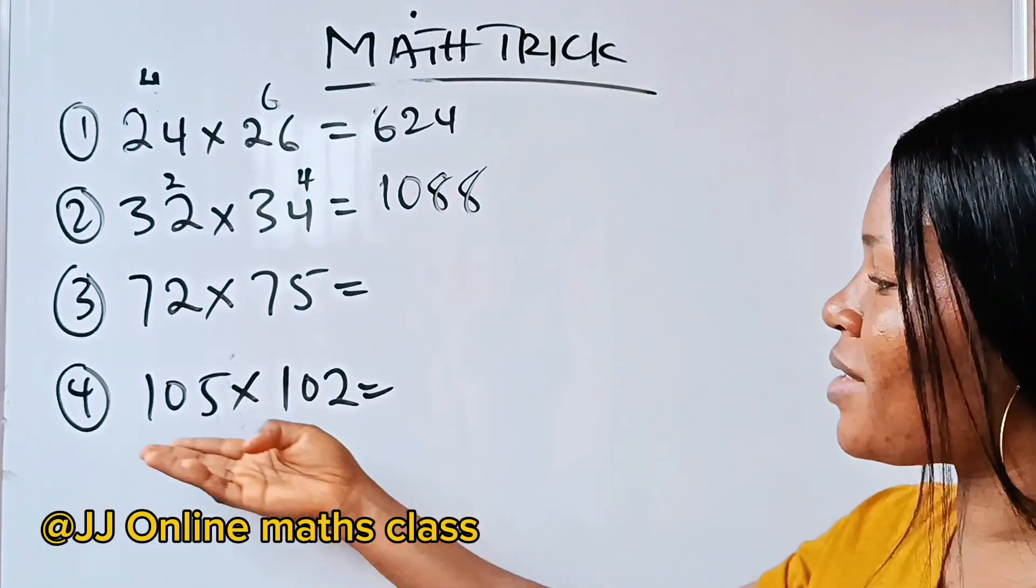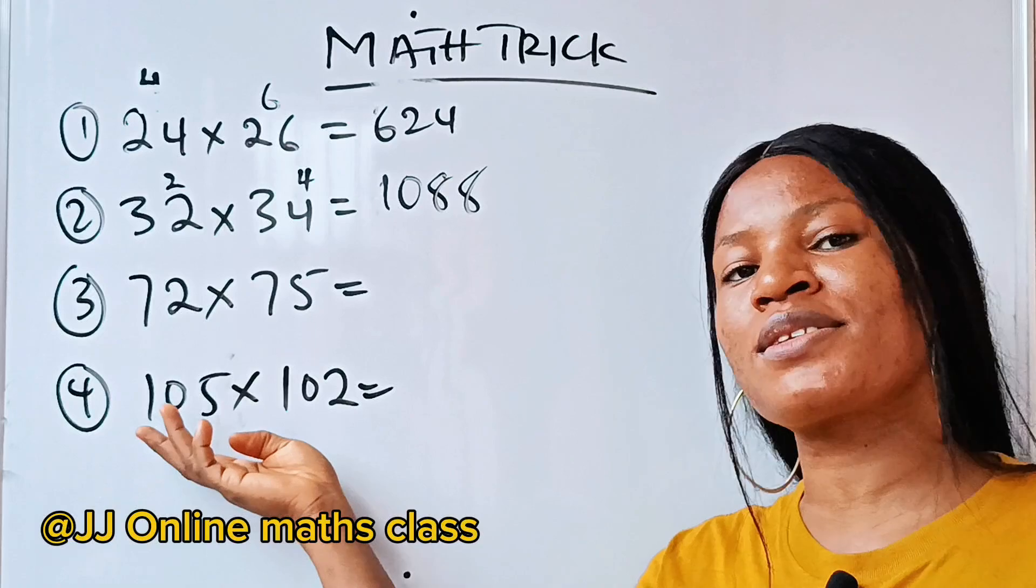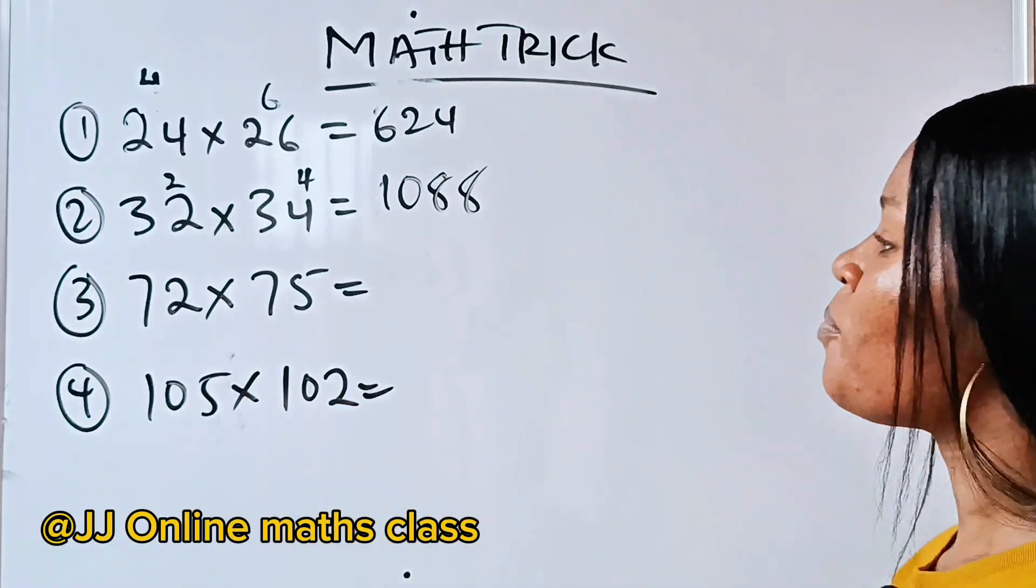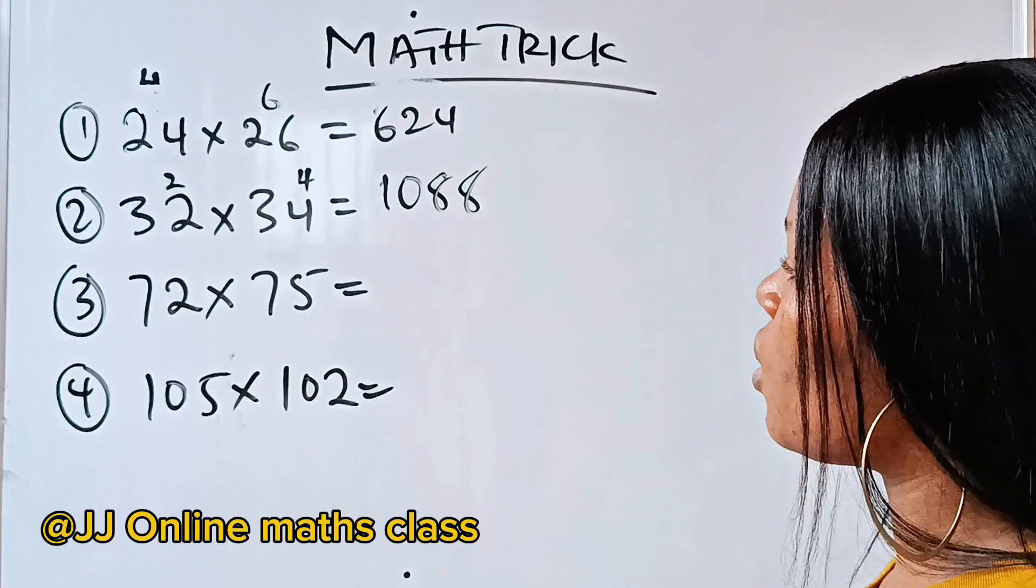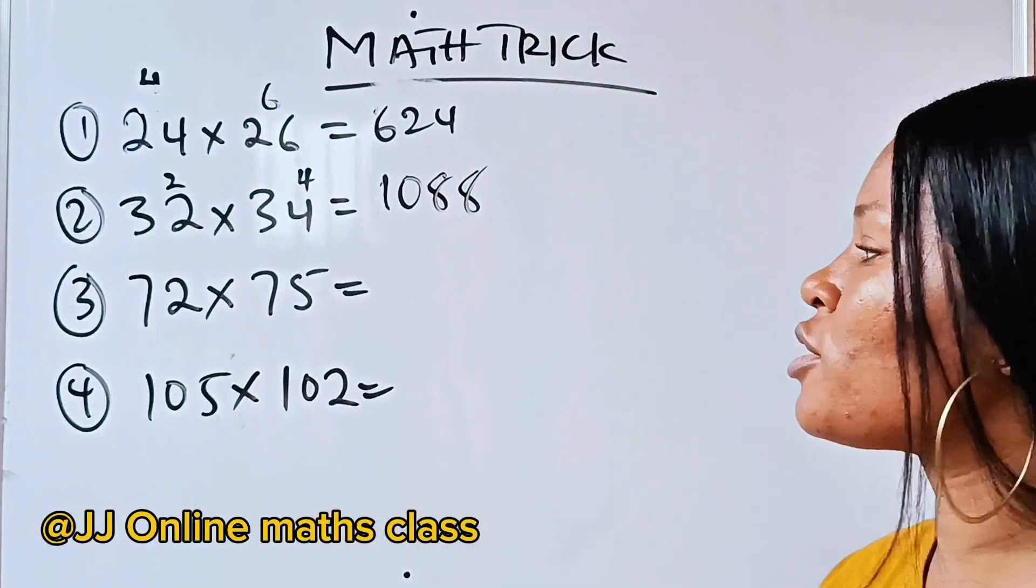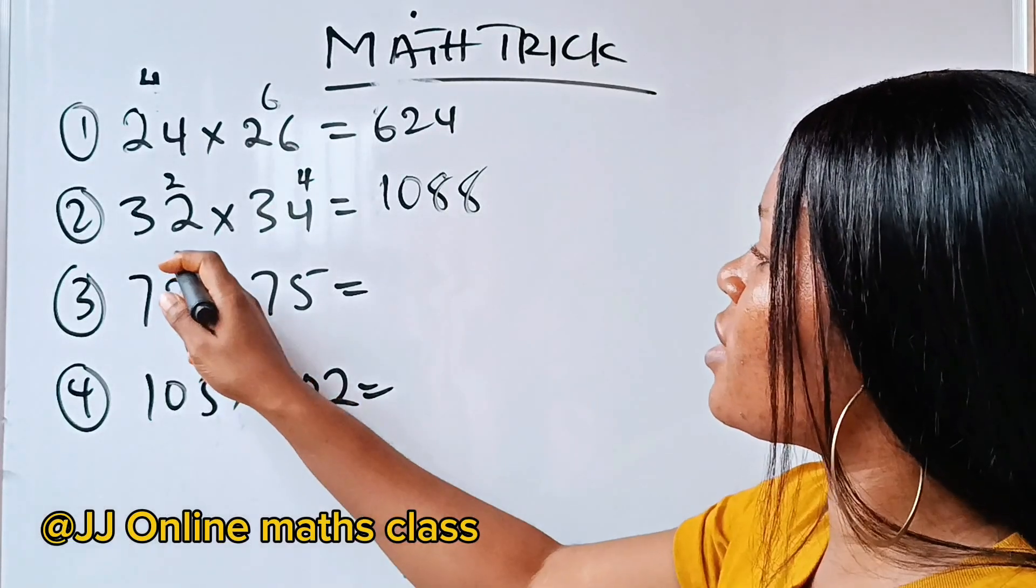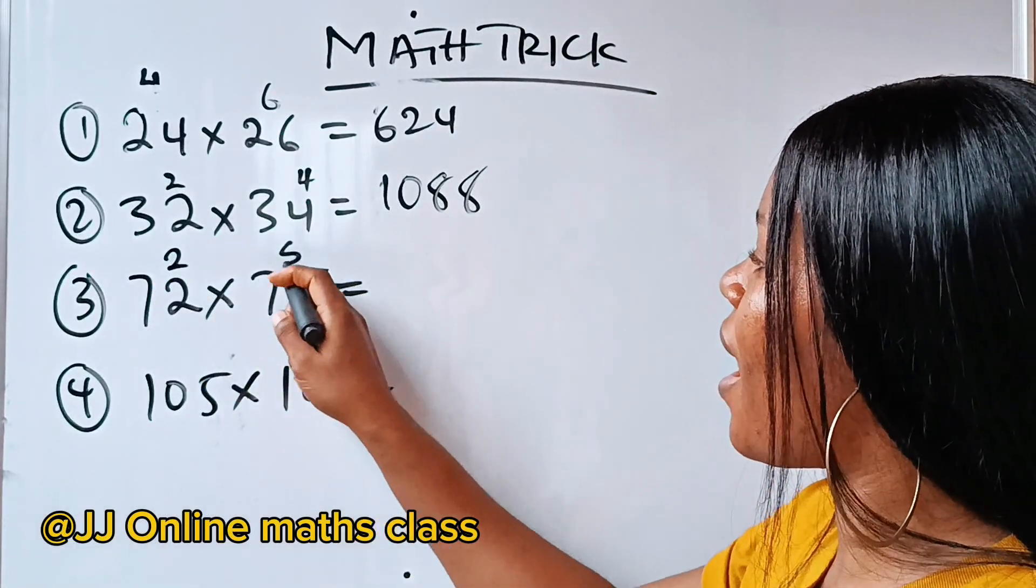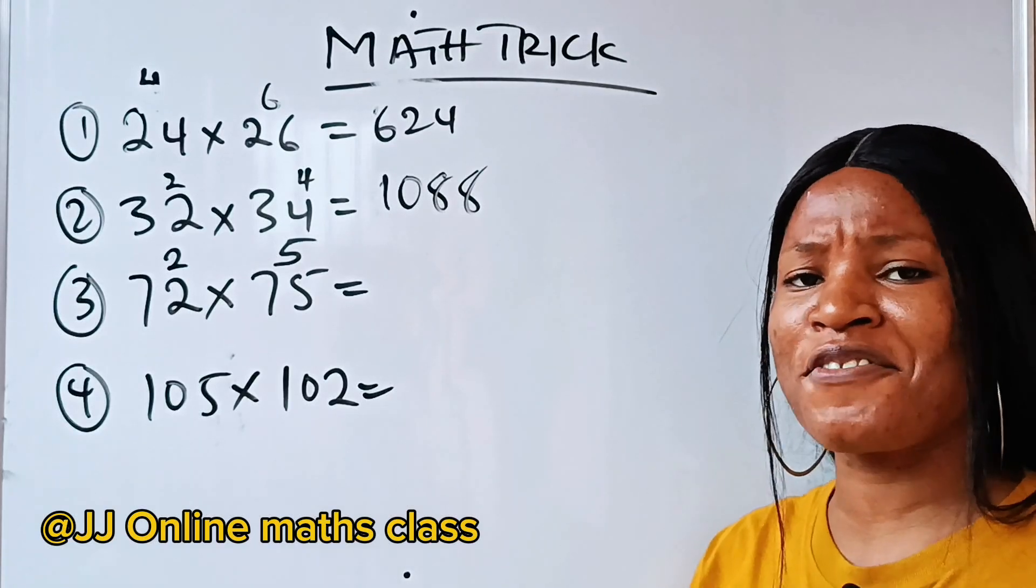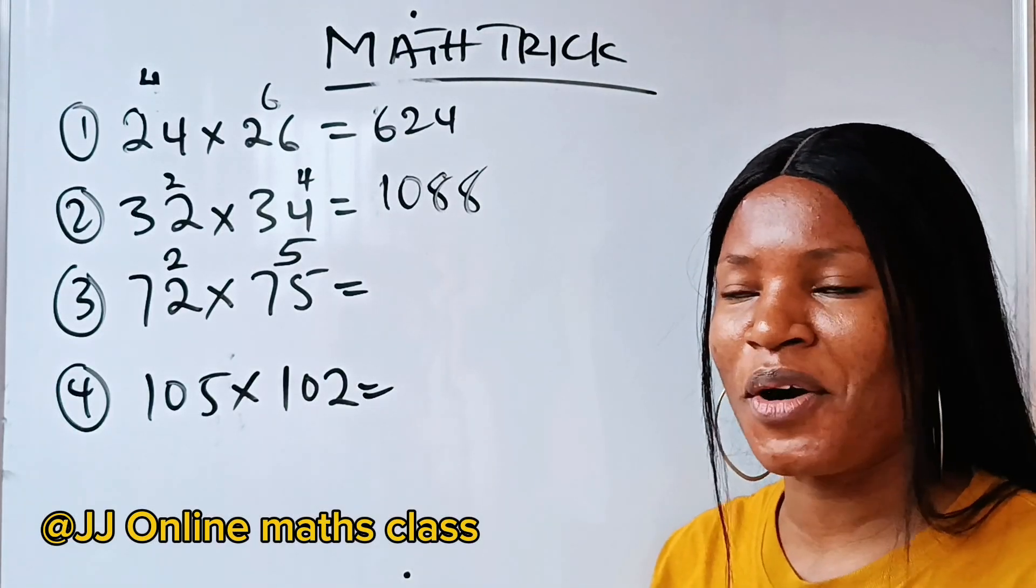Remember, I told you we are still going to do this and it's going to take a different shape or a different method. Now, for this one, we have 72 multiplied by 75. So, this is 2 extra. This is 5 extra. You can pause the video and see if you'll be able to get this right.